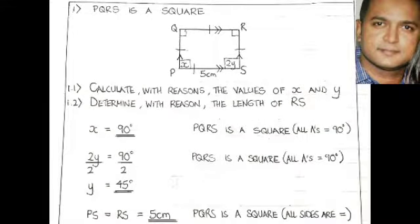When finding the length of RS, we know that all sides of the square are equal, and so if PS equals 5 cm, then RS will also equal 5 cm. Our reason is PQRS is a square with all sides equal.